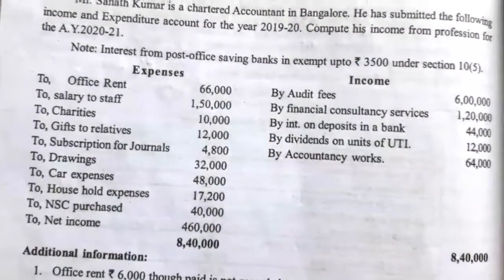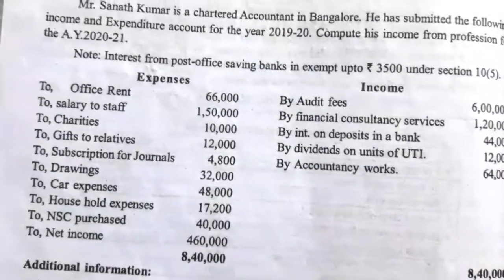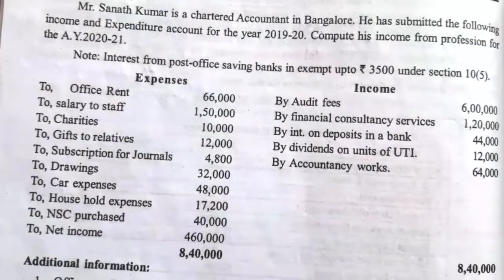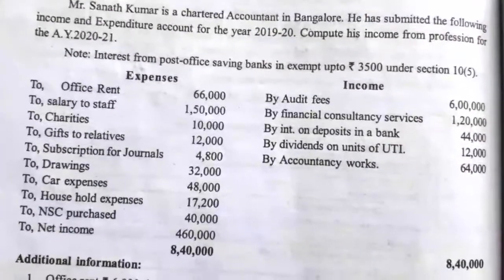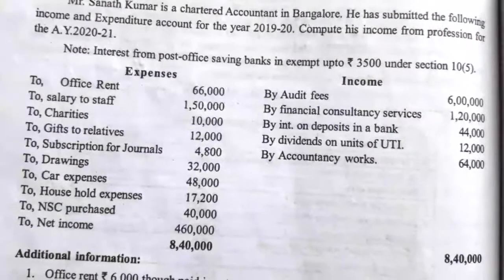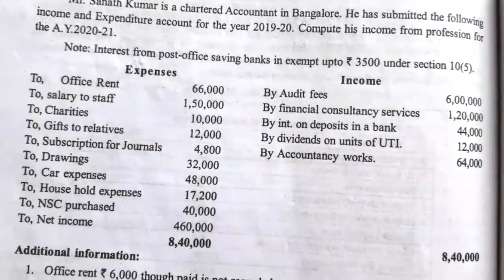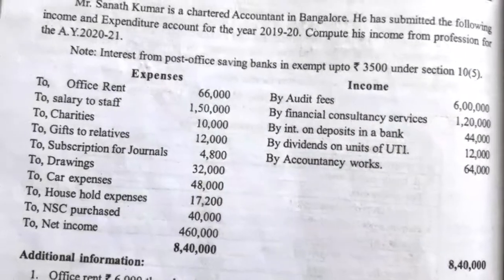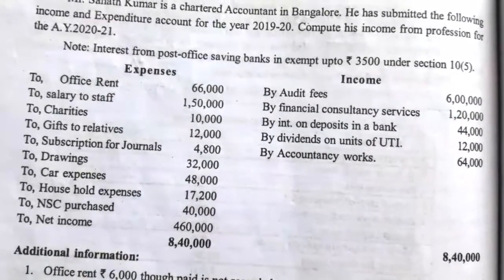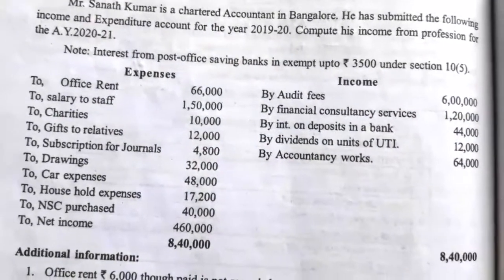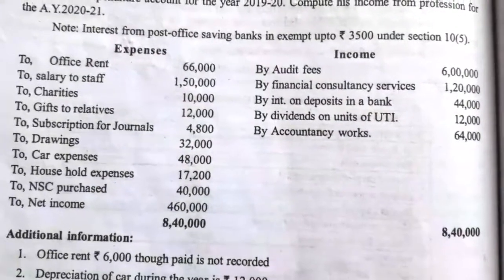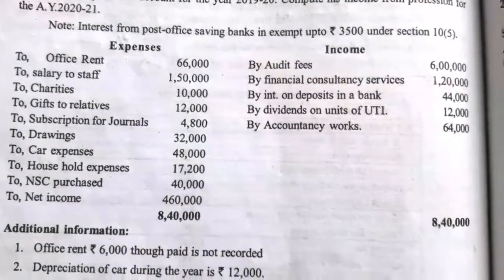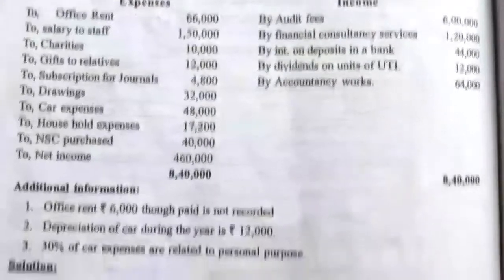On the income side: audit fees Rs. 6,00,000; financial consultancy services Rs. 1,20,000; interest on deposit in a bank Rs. 44,000; dividend on units of UTI Rs. 12,000; accountancy work Rs. 64,000. The net income is Rs. 4,60,000 and the total of both sides is Rs. 8,40,000.